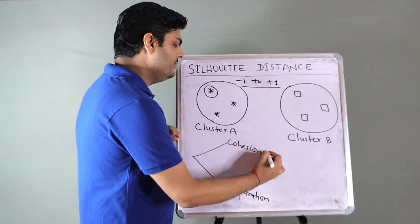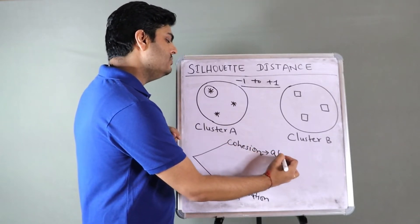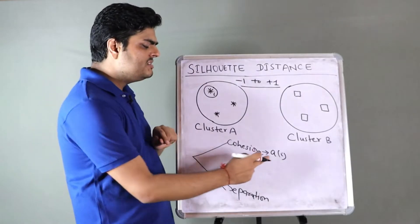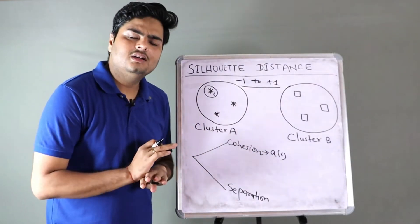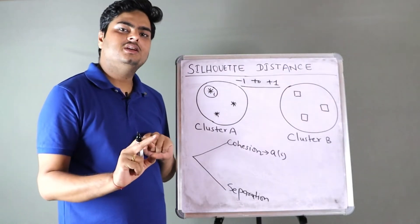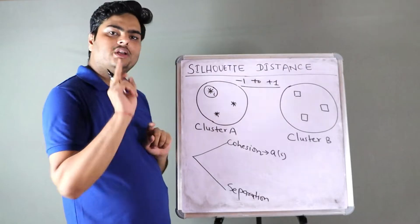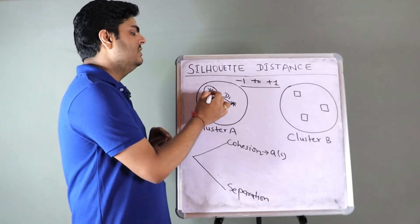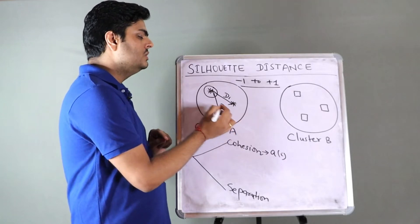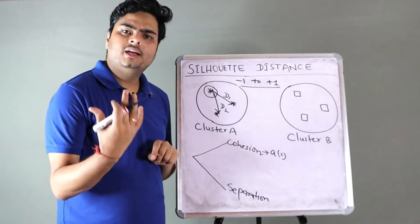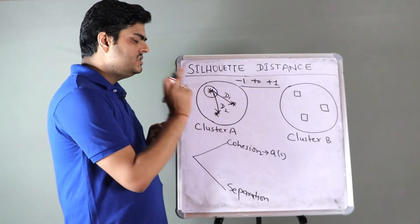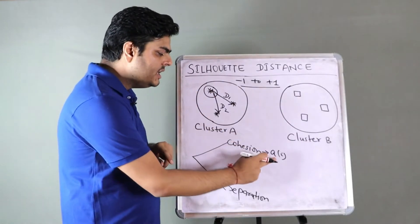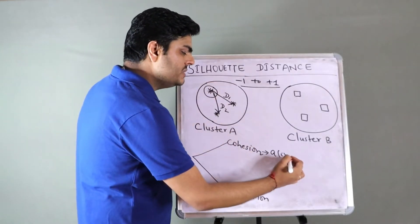And in the end, the silhouette coefficient of your entire cluster is nothing but mean of all your silhouette coefficients. So I'm going to explain how to compute silhouette coefficient for this data point. In our observation, there are six data points. All of these will have one silhouette coefficient. Take the mean, and that is your silhouette coefficient of the entire cluster.